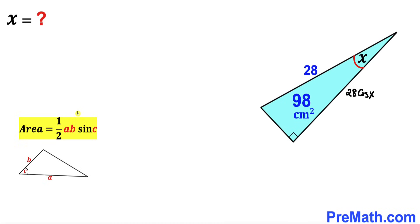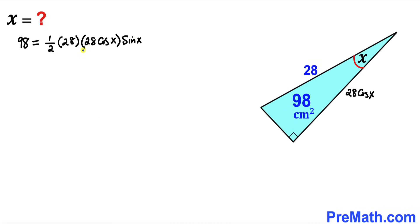Let's fill in the blanks in this formula. Area in our case is 98, equals one half times 28 times 28 times cosine of x, and then times sine of x. Now let's focus on this part: 28 times cosine of x times sine of x. I'm going to tweak this — I can write it as 14 times 14 times 2 sine of x times cosine of x.